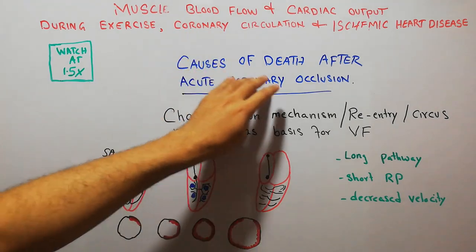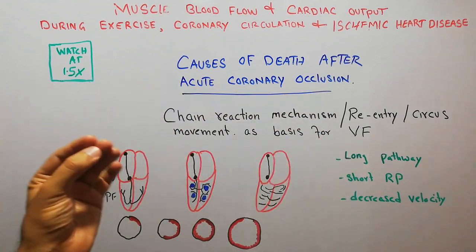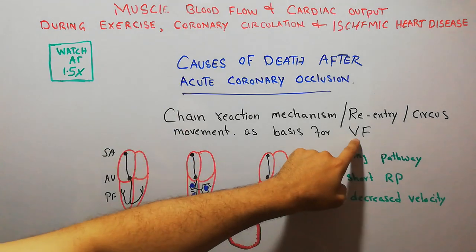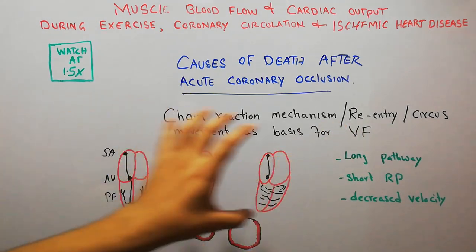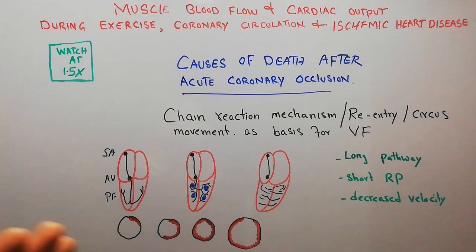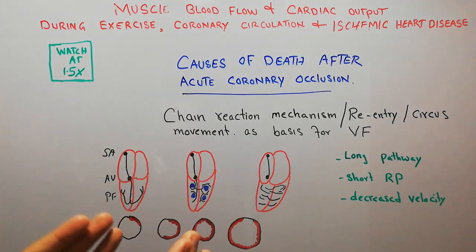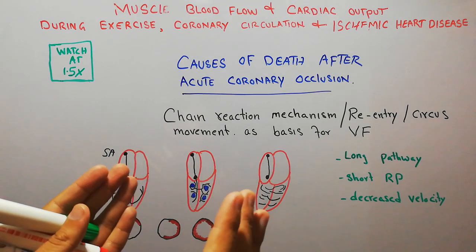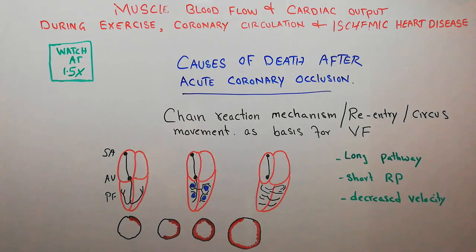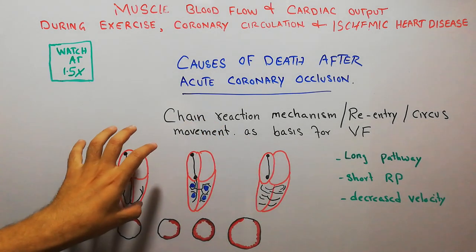We have discussed that the most important causes after acute coronary occlusion include cardiogenic shock, acute pulmonary edema, and ventricular fibrillation. In our lecture about ventricular fibrillation, we discussed that basically ventricular fibrillation is the uncoordinated contractions of different parts of the heart muscles, in which there is no proper pumping — the different parts contract irregularly, not synchronously, and not in coordination with each other. So there is no proper pumping of blood, no proper cardiac output, and there is a sort of cardiac arrest.